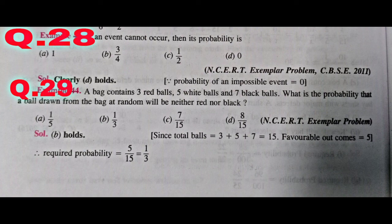Question number 29. A bag contains 3 red balls, 5 white balls, and 7 black balls. What is the probability that a ball drawn at random will be neither red nor black? That means the ball must be white. White balls = 5, total balls = 3 + 5 + 7 = 15. Probability = 5/15 = 1/3.